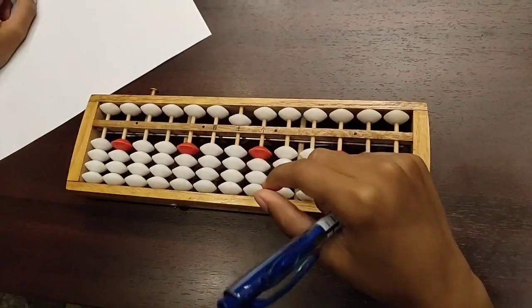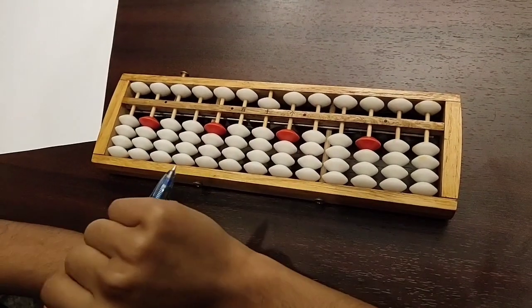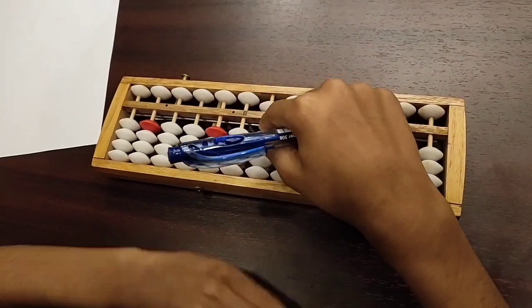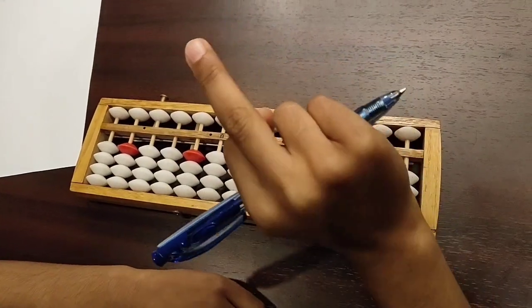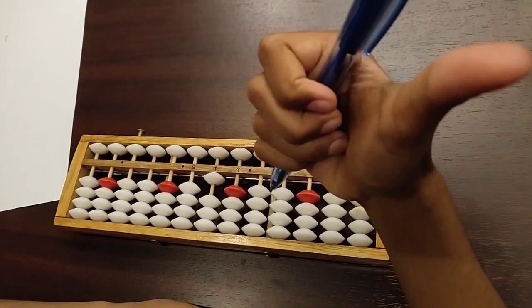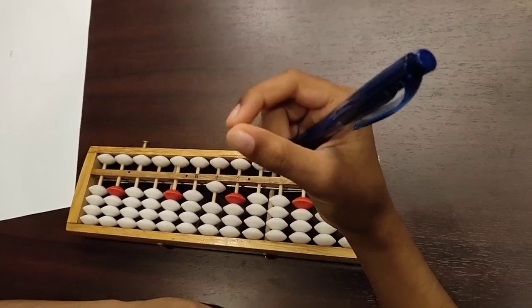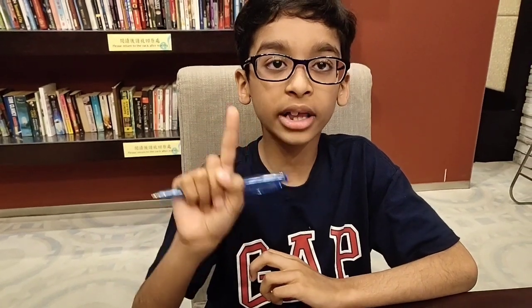Now the final step is minus 4. But how do you do it? Because we don't have enough beads to move down. So the thing we have to do is move the 5 back up with your middle finger and put 1 bead up with your thumb finger. Because 5 minus 1 equals 4. The method is minus 5 plus 1.